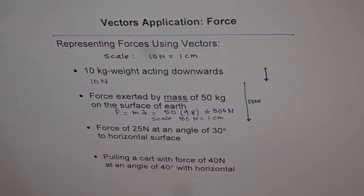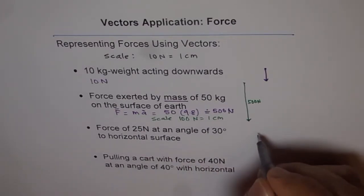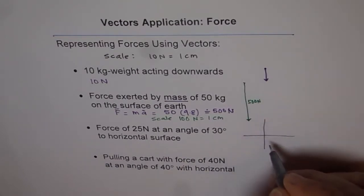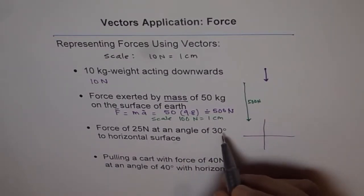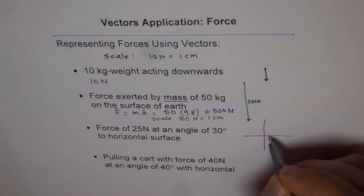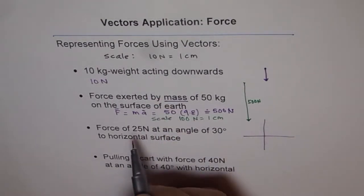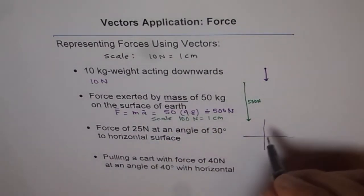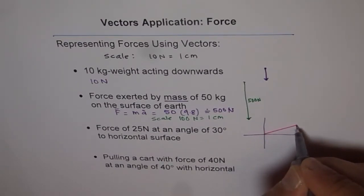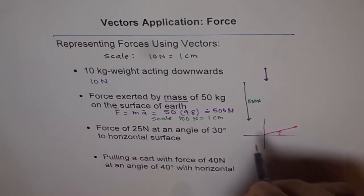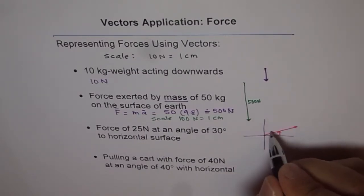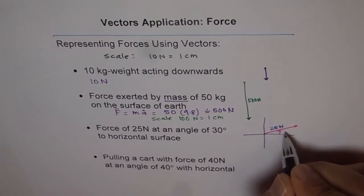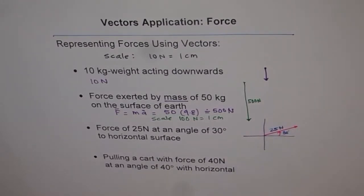Now the next one is force of 25 Newton at an angle of 30 degrees to horizontal. We could have drawn the coordinate system, and then 30 degrees from the horizontal. So this is your horizontal. Let's say 10 Newton is 1 centimeter. So 2.5 centimeter long should be your arrow, and the angle will be 30 degrees. This is my 30 degrees angle from here, and that is 25 Newtons at 30 degrees. So like this, you can draw your forces as vectors.